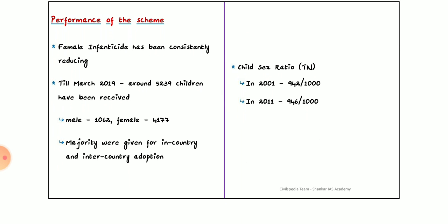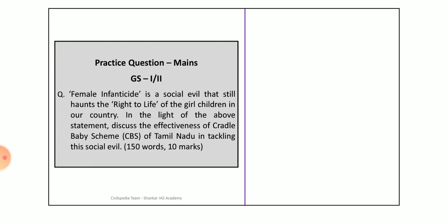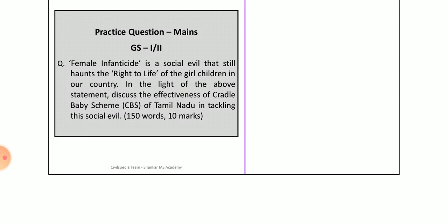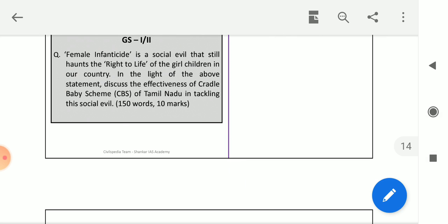Regarding the performance of the scheme: female infanticide has been constantly reducing. Till March 2019, around 52,039 children had been received — 162 male and 4,177 female. The majority were given for in-country and inter-country adoption. The child sex ratio in Tamil Nadu, which was 9.42 in 2001, improved to 9.46 in 2011. Female infanticide is a social evil that still hunts the rights of life. Please like, subscribe, and share the video. Thank you.